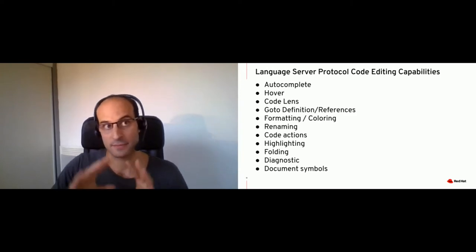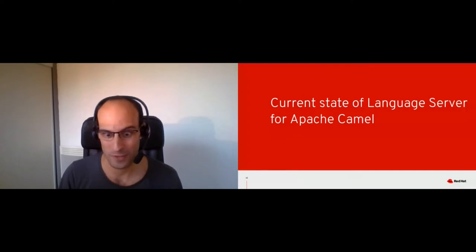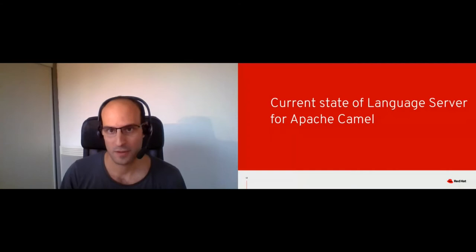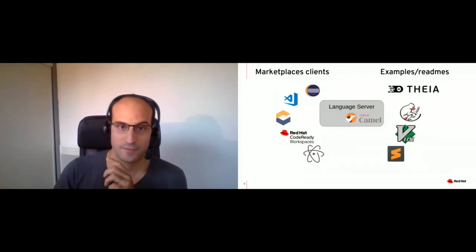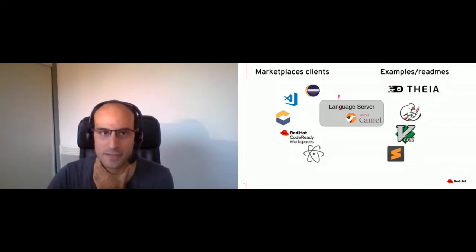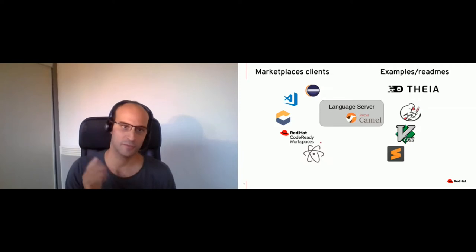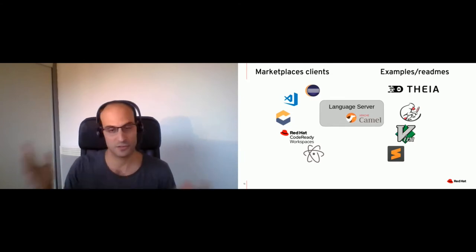I've explained what the Language Server Protocol is and why we chose it, and how it helps provide support for Apache Camel in several IDEs. Now I'll talk about what has been done specifically for Apache Camel. There is the server, written in Java. We also provided specific clients for a bunch of IDEs: Eclipse desktop, VS Code, Eclipse Che, Che workspaces, and Atom. From the end user point of view, it's really like any other extension — they don't know it's a language server, and it's easy to find and install in their IDE.